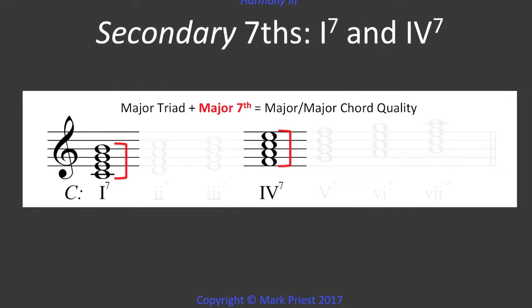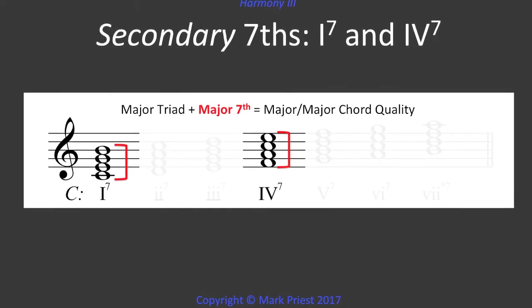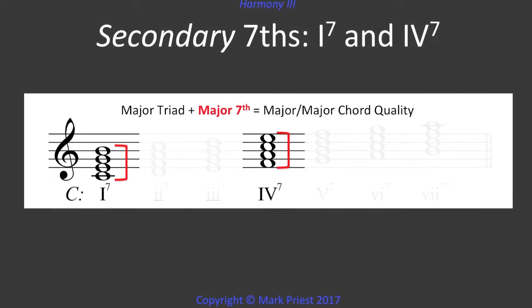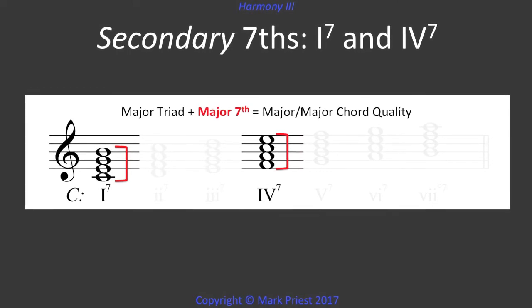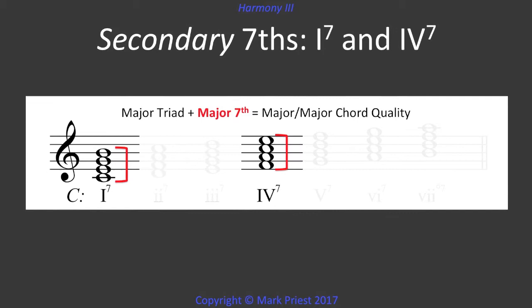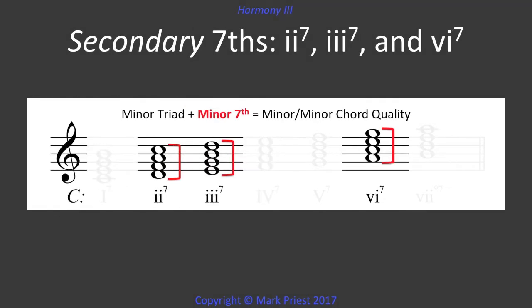We observe that each of the secondary 7th chords contains a different mix of intervals. Some consist of a major triad plus a major 7th, counting up from the root of the triad. The tonic I7 and subdominant IV7, rooted on the 1st and 4th scale degrees, are of this major-major quality. Three of the 7th chords combine a minor triad with a minor 7th. We find this minor-minor chord quality at the supertonic, mediant, and submediant, rooted on the 2nd, 3rd, and 6th degrees of the major scale.